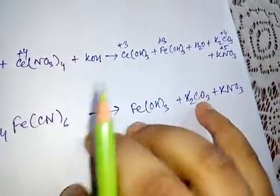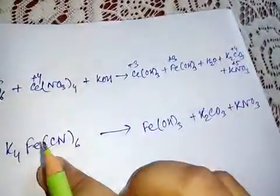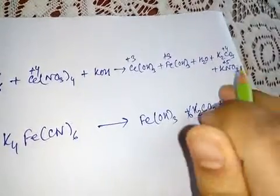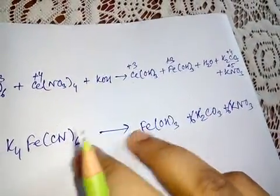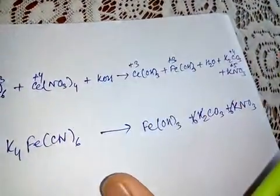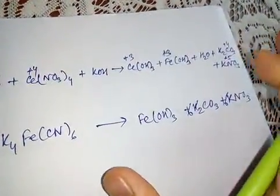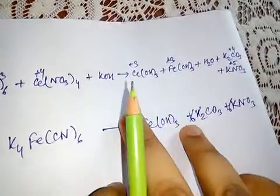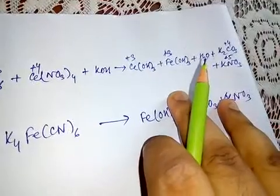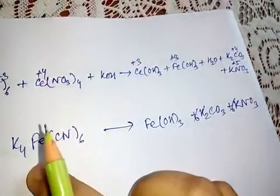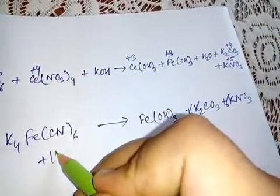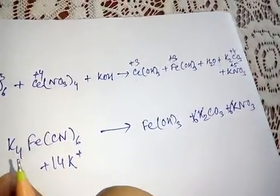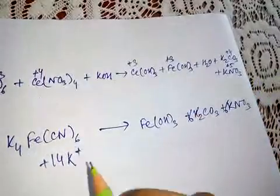First I will balance the atoms whose oxidation number is being changed. For the oxidation half reaction: K4Fe(CN)6 is oxidized to Fe(OH)3, K2CO3, and KNO3. Carbon is 6 on both sides, nitrogen is balanced, carbon is balanced, iron is balanced. Now balancing potassium: on the left it is 4, and on the right it is 6×2 = 12 plus 6 = 18. So I have to add 14 more potassium as K+ ions. 14 plus 4 is 18, matching both sides.